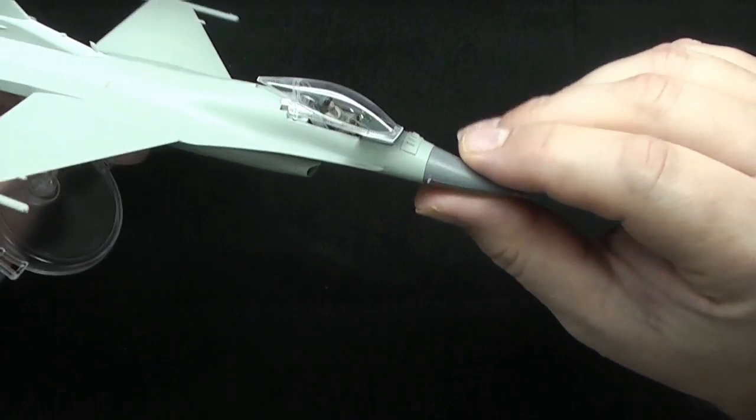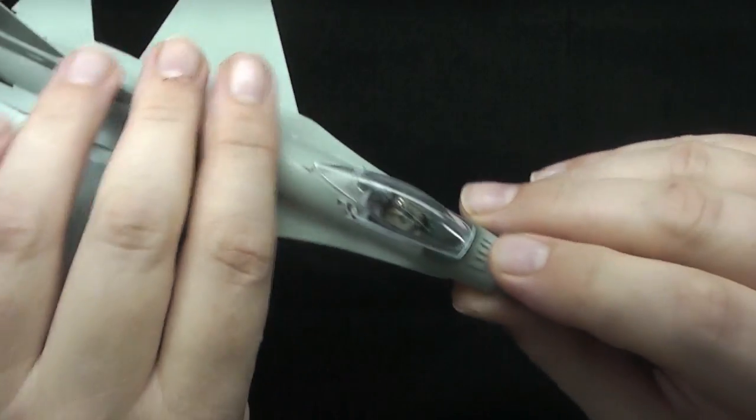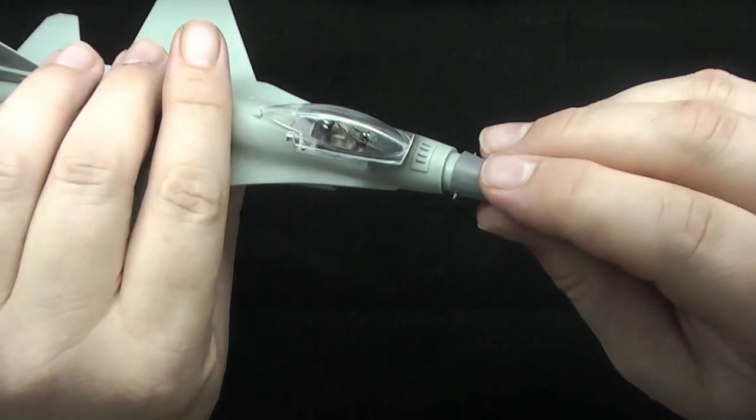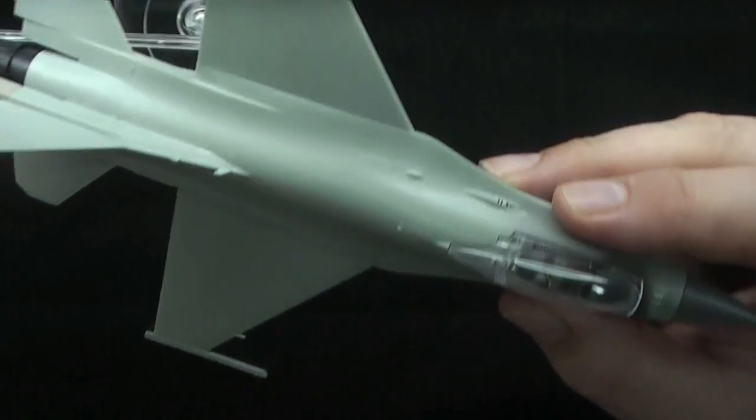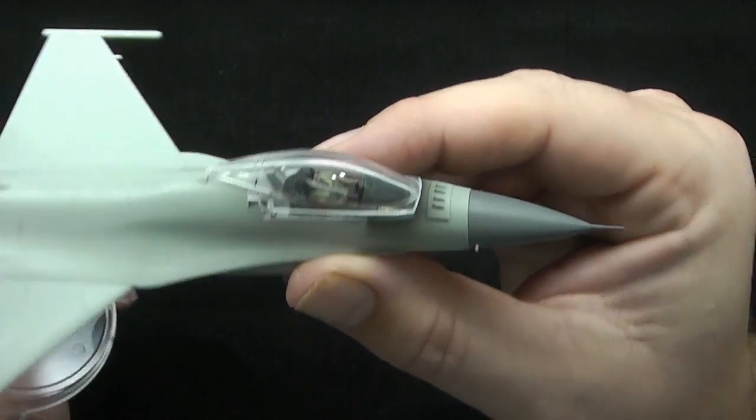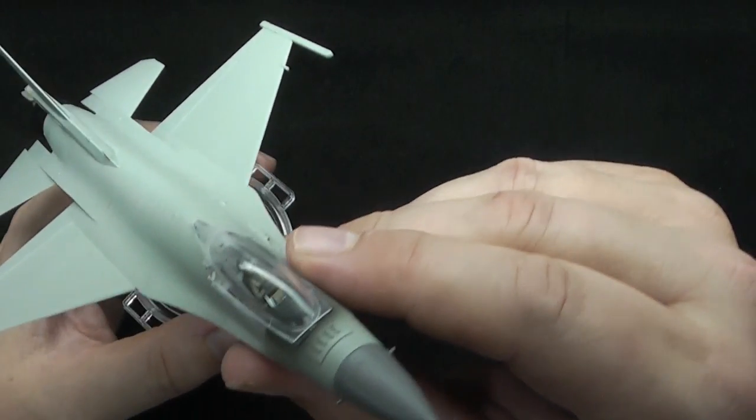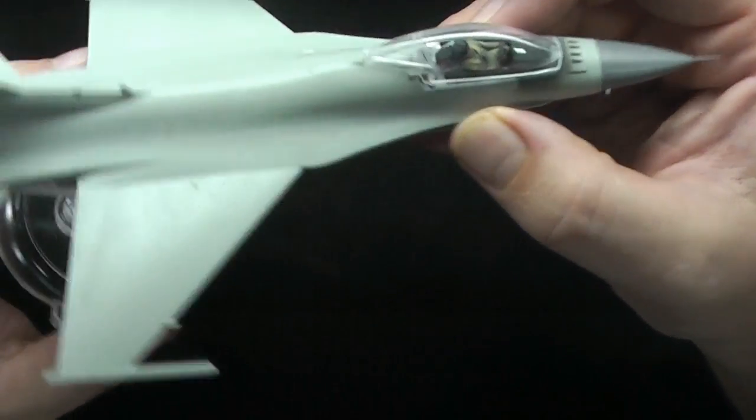The nose here, it just, oh, it's technically comes off. So I'll paint that separately and just whack it on. And then the last thing to do was the canopy, it had a nasty seam down the middle. So I scratch that off and polish it up.